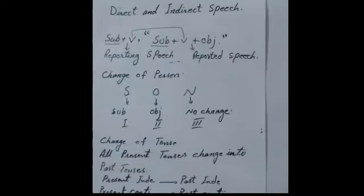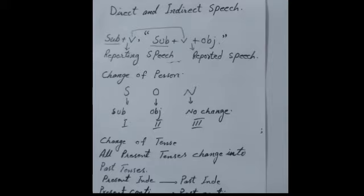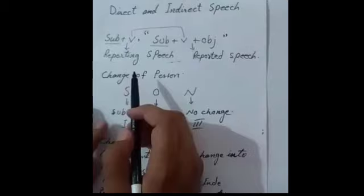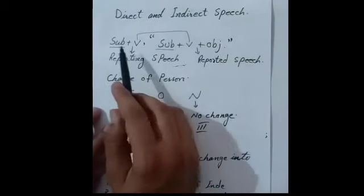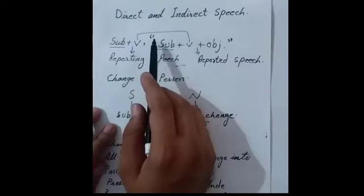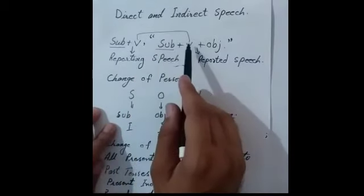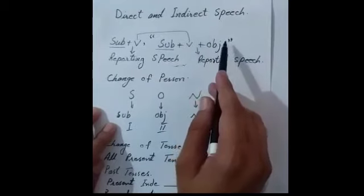Now, in the structure of narration, there are two parts. The structure has a subject, verb, inverted commas, then inside: subject, verb, object, and closing inverted commas. The part outside the inverted commas and the part inside the inverted commas each have a role.